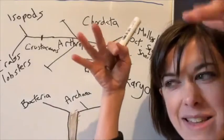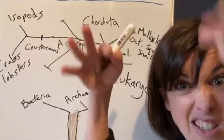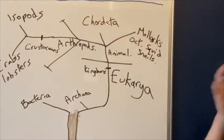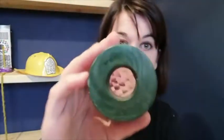Woodlice have two pairs of antennae — one to sense chemical things like whether the environment is acidic, and one for tactile use, to touch stuff and work out where they're going. And four sets of jaws. Isopods have compound eyes. There are like 5,000 different species of woodlice, right at the end of that evolutionary tree. They live everywhere — they've adapted to be just all over the place.